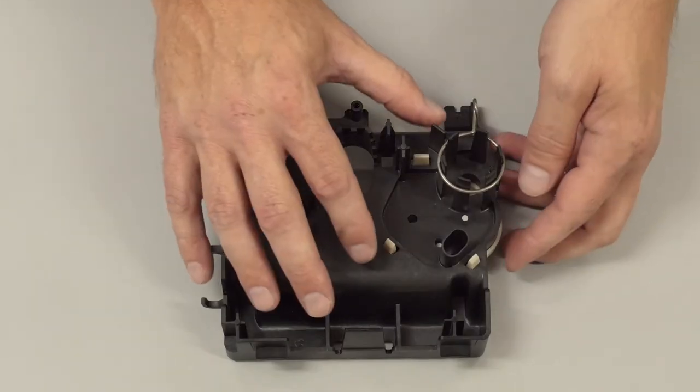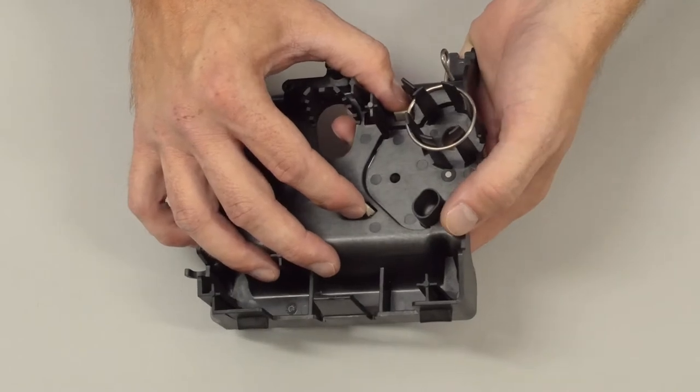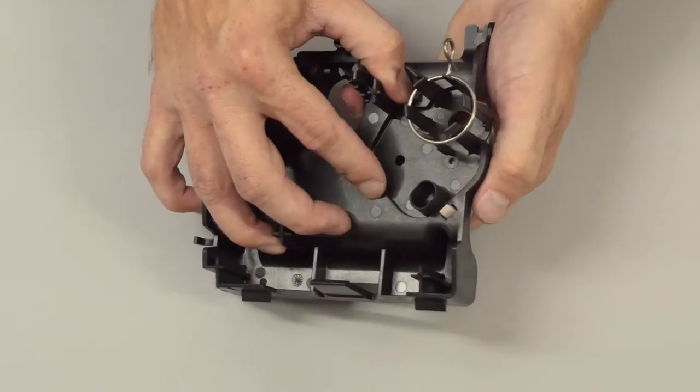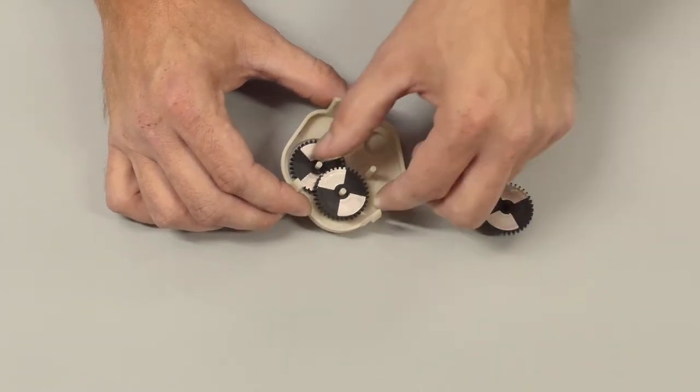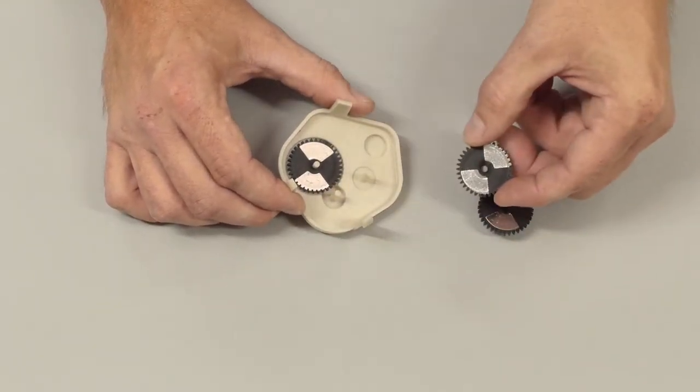To remove the drive gears, depress the three tabs to release the cover. Note that these gears are all the same size, so you don't need to worry about their orientation.